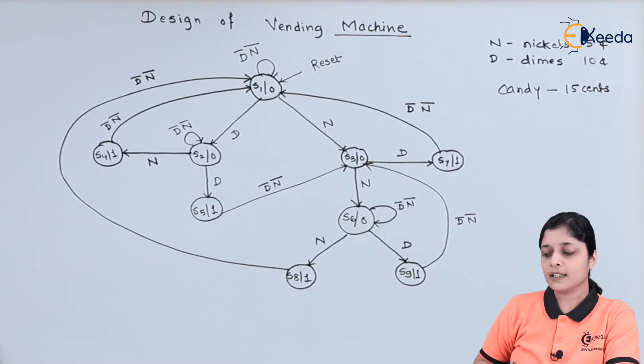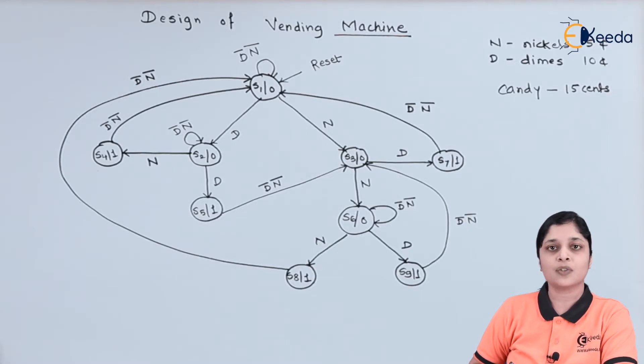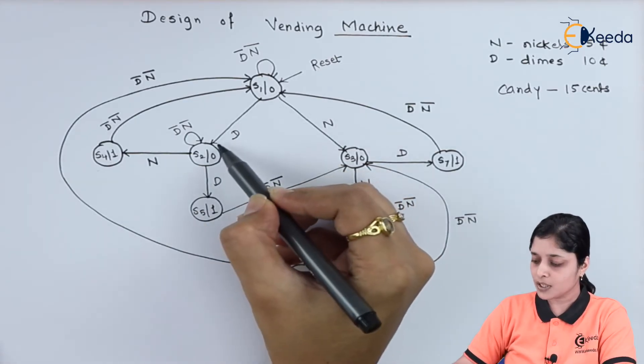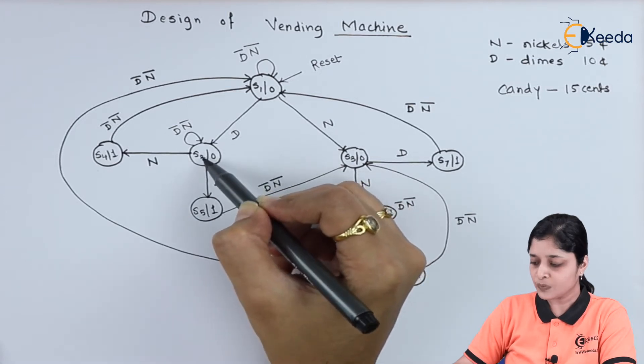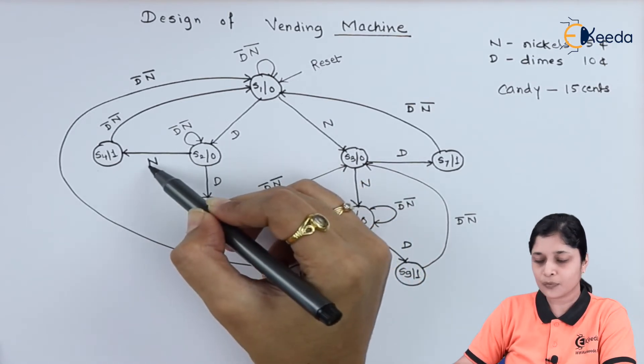Accordingly, this vending machine will work and it will give the customer respective candy. If dime is inserted, that is having value 10, and if nickel is inserted, that is value 5.